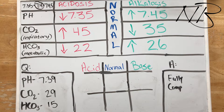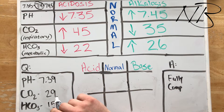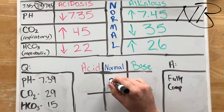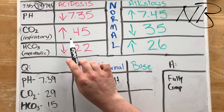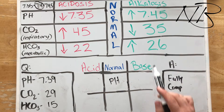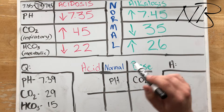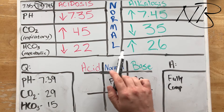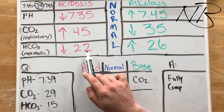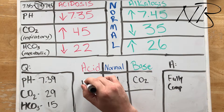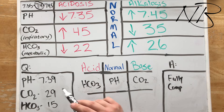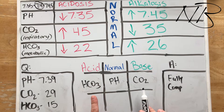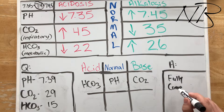For our third question, our pH is 7.39, which we know is normal. CO2 is 29, which is less than 35, so the CO2 is going to go in the alkalosis column. Our bicarbonate is 15, which is much less than 22, so our bicarbonate is going to go in the acid column. We have a normal pH but both our CO2 and our bicarbonate are altered — so we know from that alone that we are in a state of full compensation.